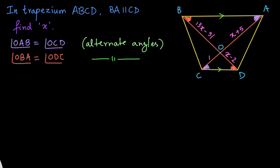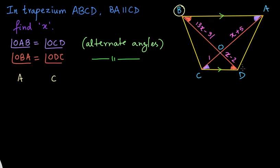But first of all, we should know the proper order in which we are writing the triangles — this order is very, very important. You can observe it from the angles themselves. Angle C corresponds to angle A, so vertex C corresponds to vertex A. Point B corresponds to point D because of the alternate angles. We have the common vertex O for both triangles. So triangle OAB is similar to triangle OCD.